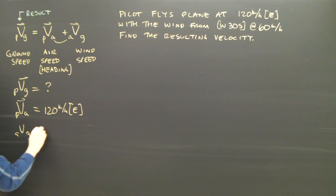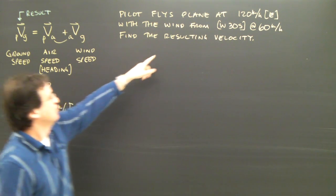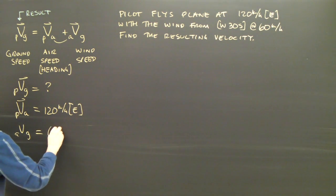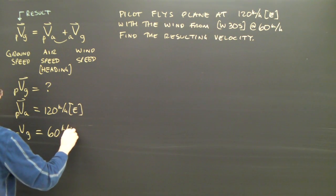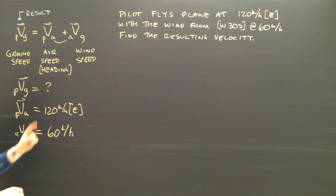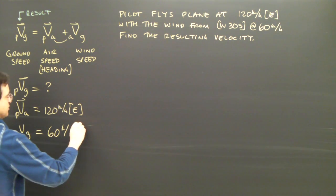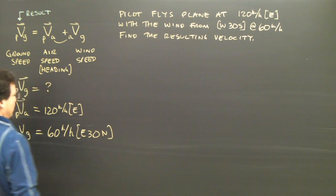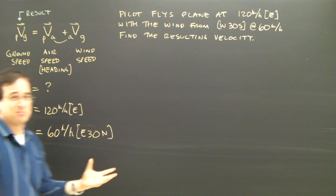The air relative to the ground. What is the wind doing? It is from west 30 south. So it's 60 kilometers per hour from west 30 south. So the opposite of west 30 south is east 30 north. At this point,